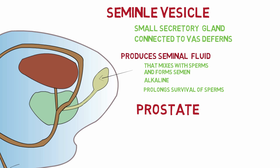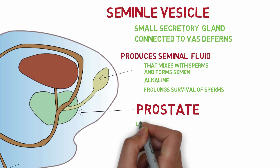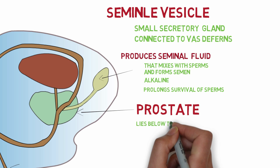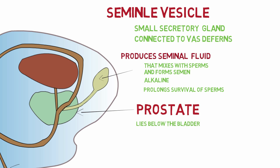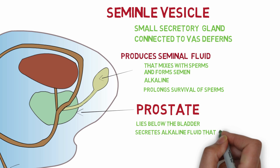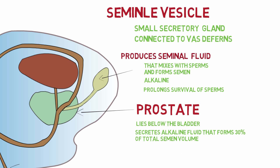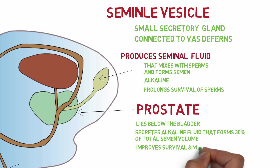The final internal reproductive organ is the prostate gland. The prostate lies below the bladder, and its main function in reproduction is to produce alkaline fluid that forms 30% of the total semen volume. This fluid improves the survival and motility of the sperms.